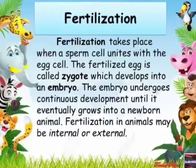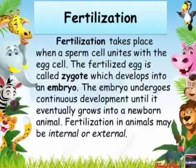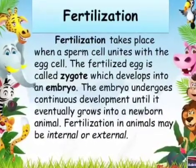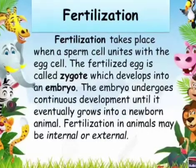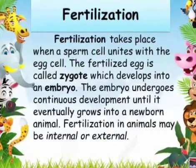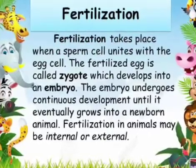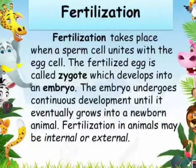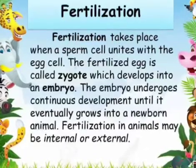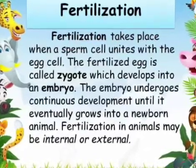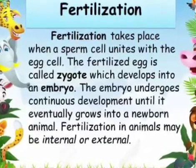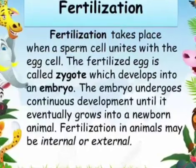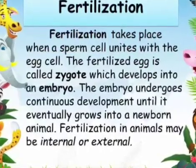Fertilization takes place when a sperm cell unites with the egg cell. The fertilized egg is called a zygote, which develops into an embryo.